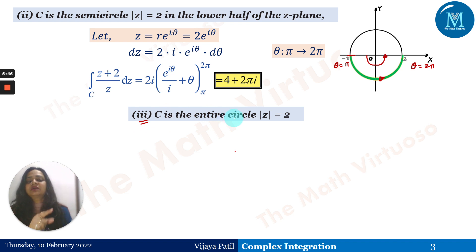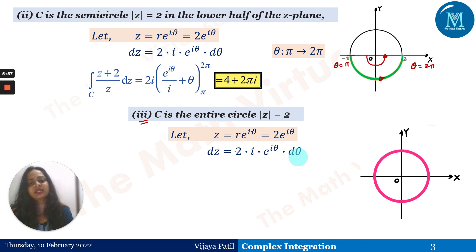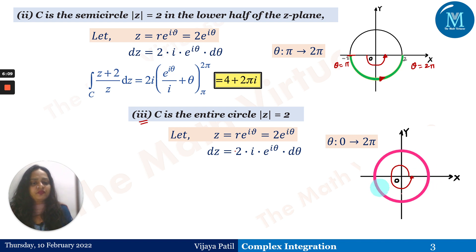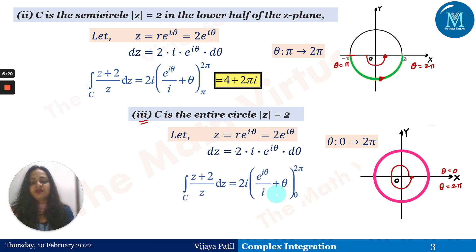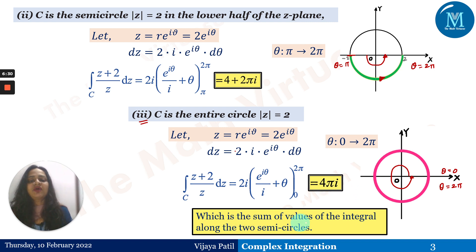For the third case, C is the entire circle |z|=2. We again use z = 2e^(iθ). Since we are tracing the entire circle starting and returning to the same point, θ moves from 0 to 2π. Evaluating the integral over this full circle gives the answer: 4πi.